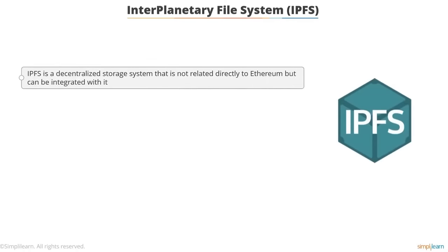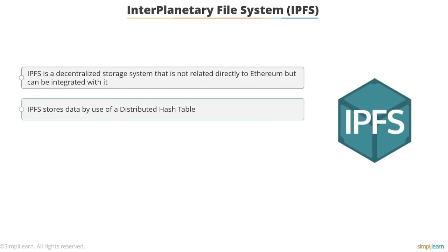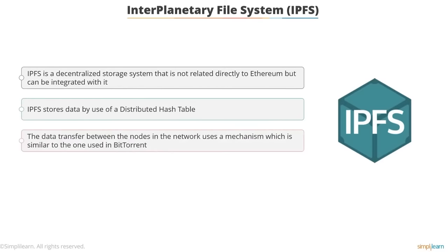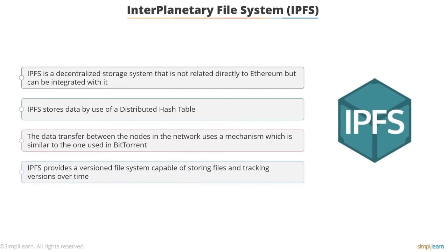IPFS is a decentralized storage system that is not directly related to Ethereum but can be integrated with it. IPFS stores data using a distributed hash table (DHT). Once you know the hash, you request the peer network for who has a copy of the content located at the corresponding hash, then download the content from the node that has the desired data. Data transfer between nodes uses a mechanism similar to BitTorrent. IPFS also provides a versioned file system capable of storing files and tracking versions over time — combining all these properties enables a new permanent web augmenting existing internet protocols like HTTP.